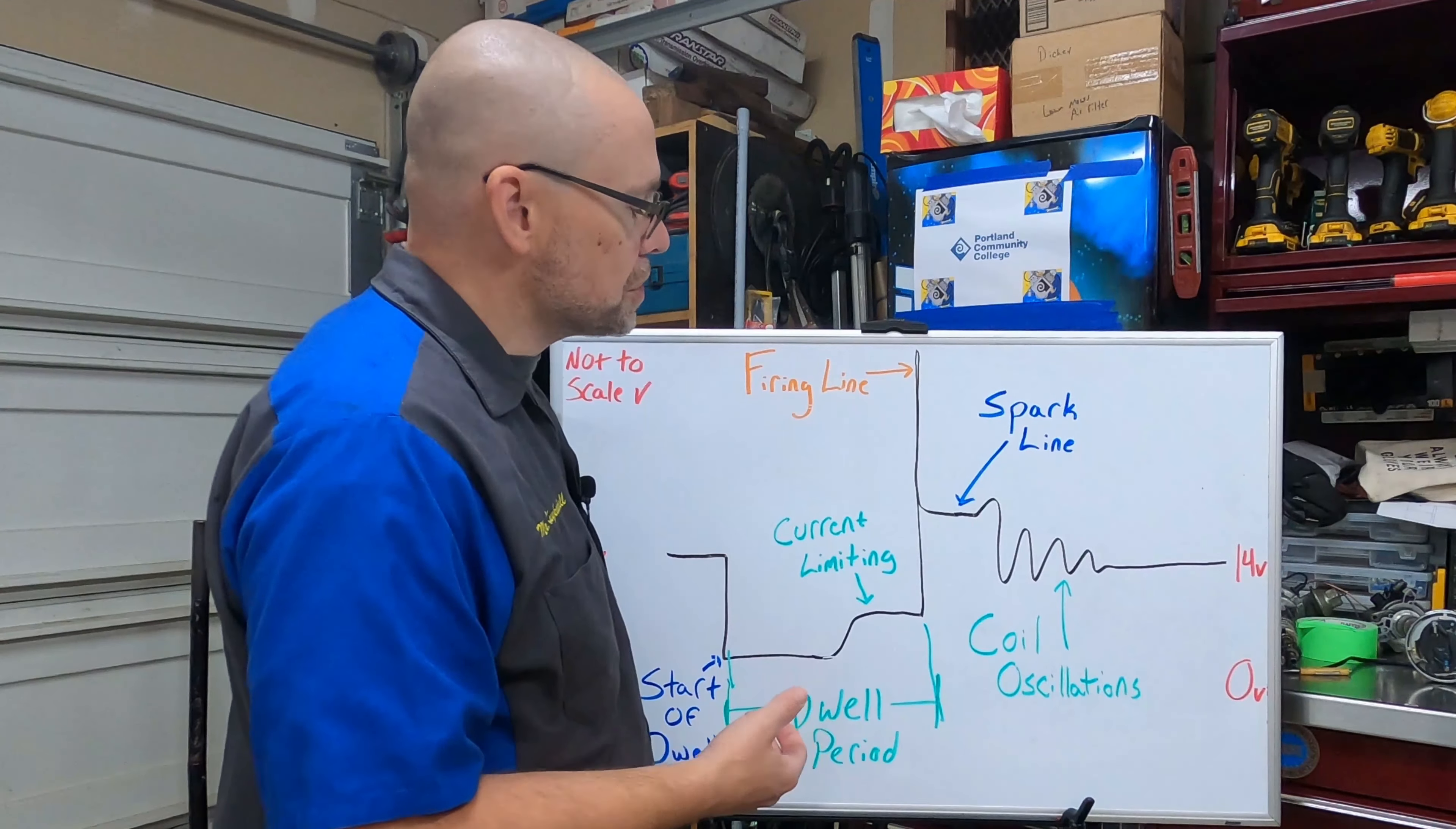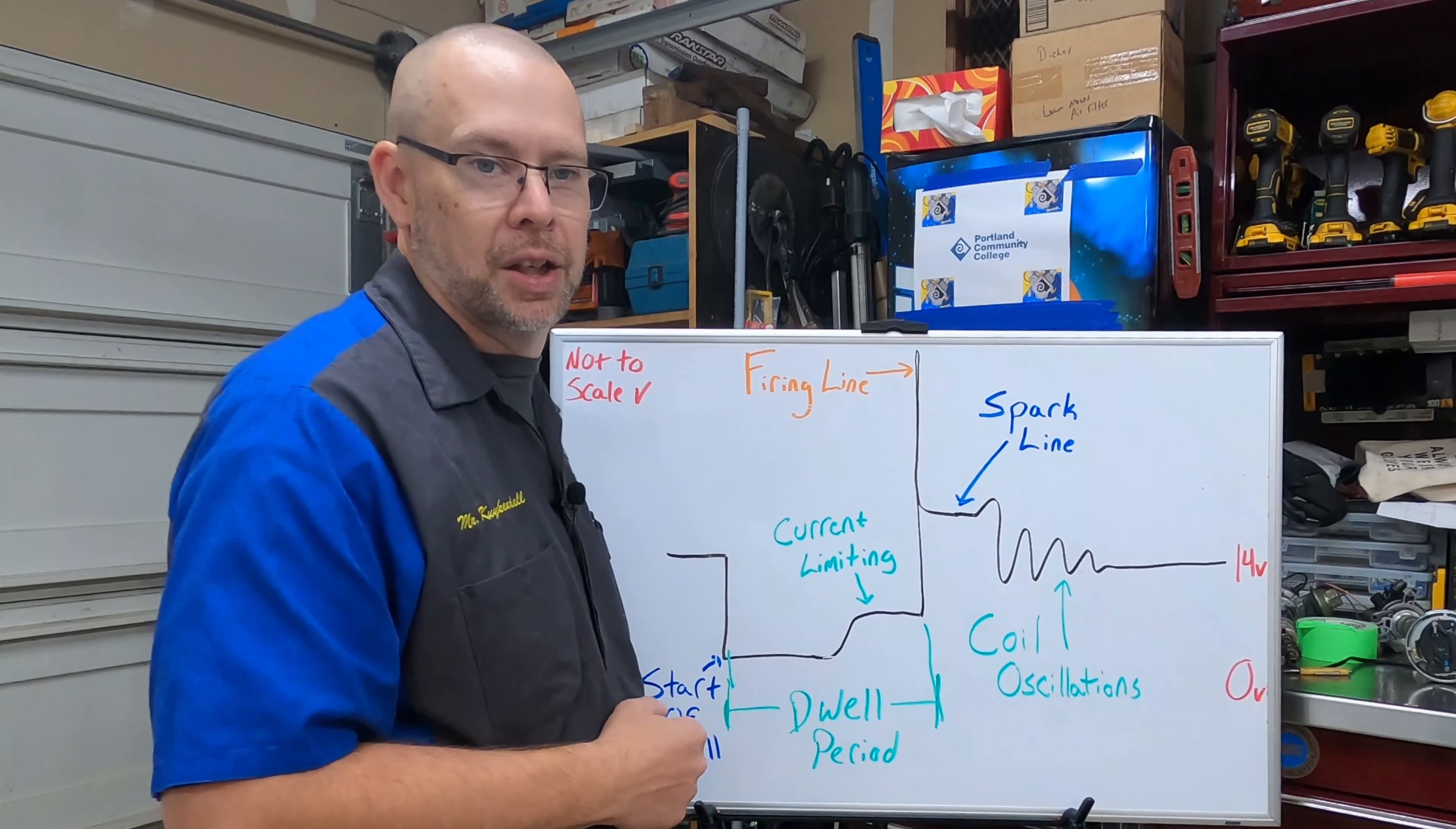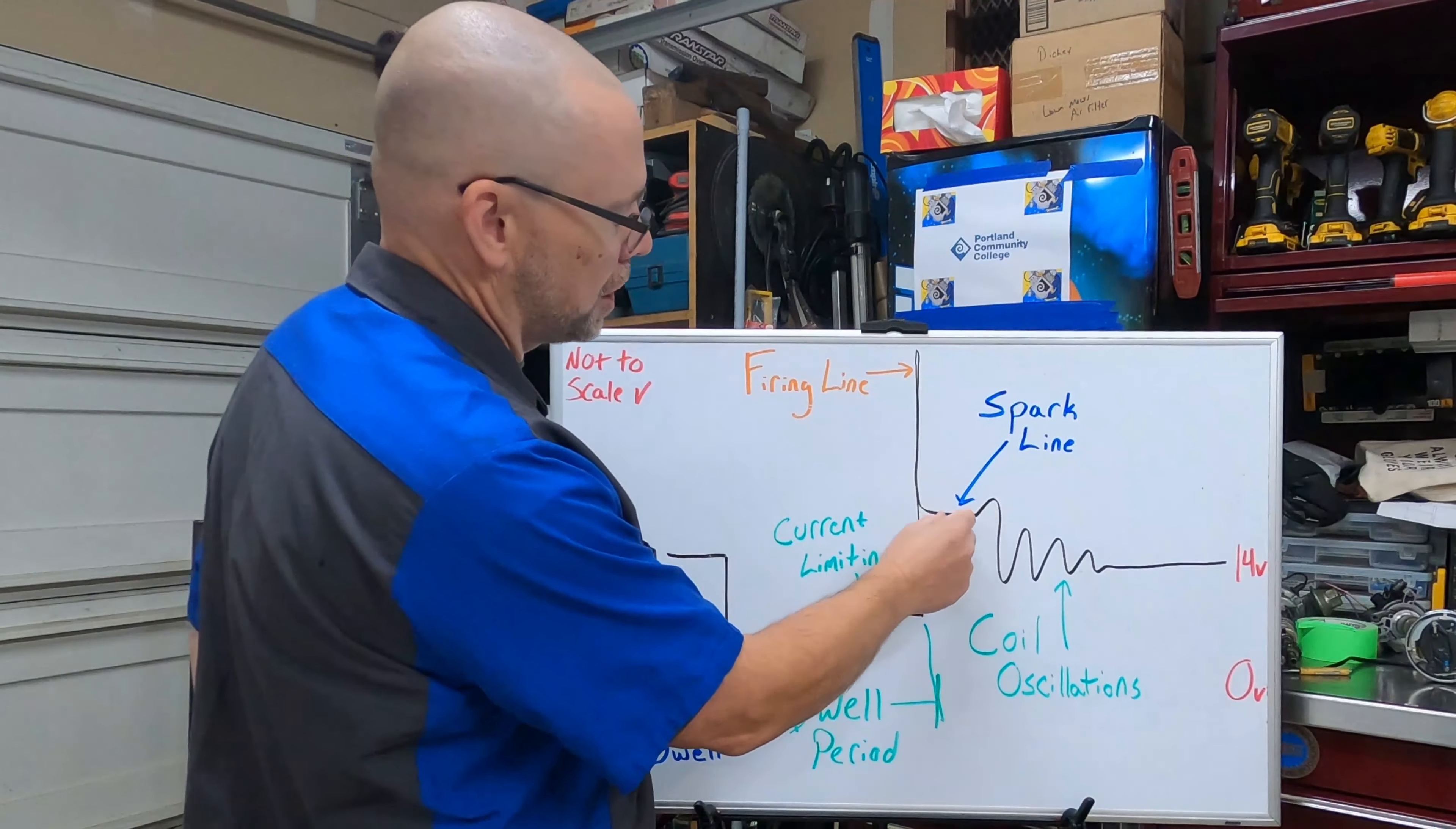If this line will get very wavy and start moving around if there's a lot of turbulence going on inside the cylinder, so this spark line can actually tell us a lot about what's going on in there. Temperature changes that high temperature raises the resistance, low temperature decreases the resistance and will move that line around and also can change its length.